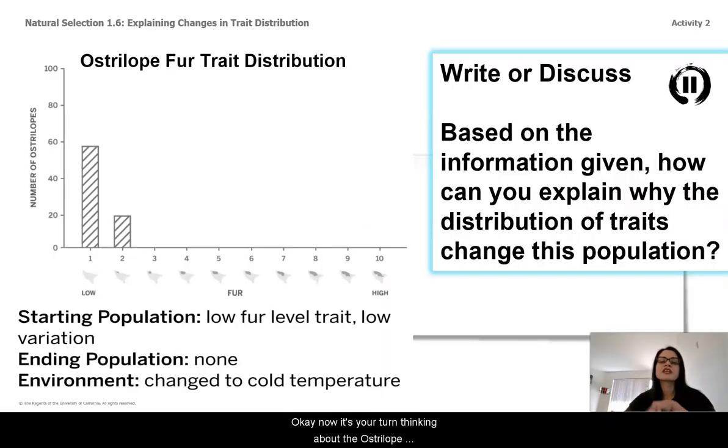Now it's your turn. Thinking about the Ostrilope fur distribution traits, based on the information given, how can you explain why the distribution of traits changed in this population?